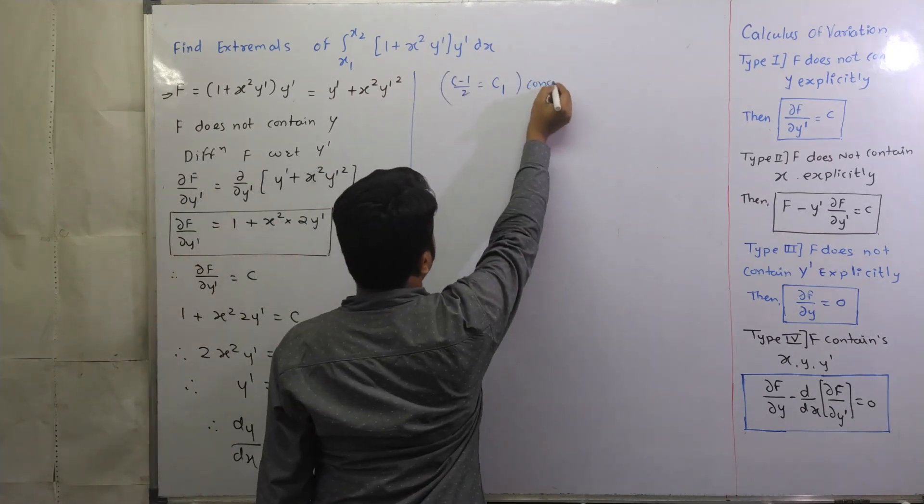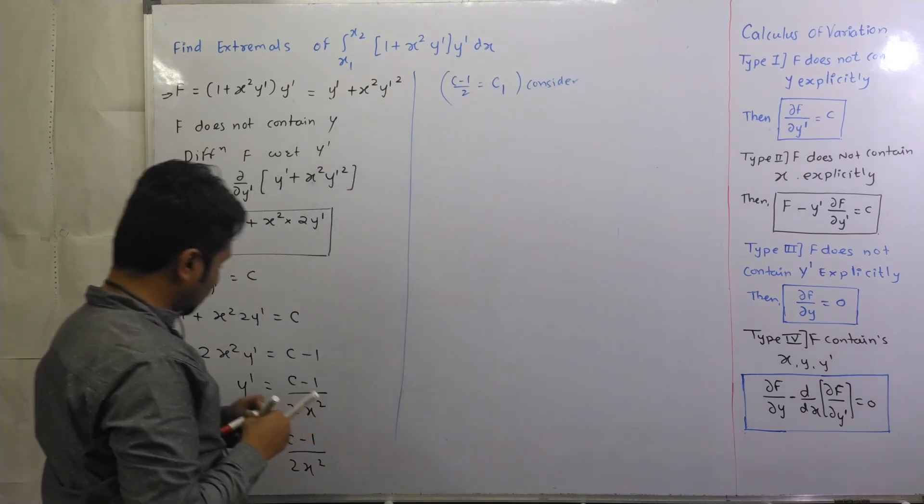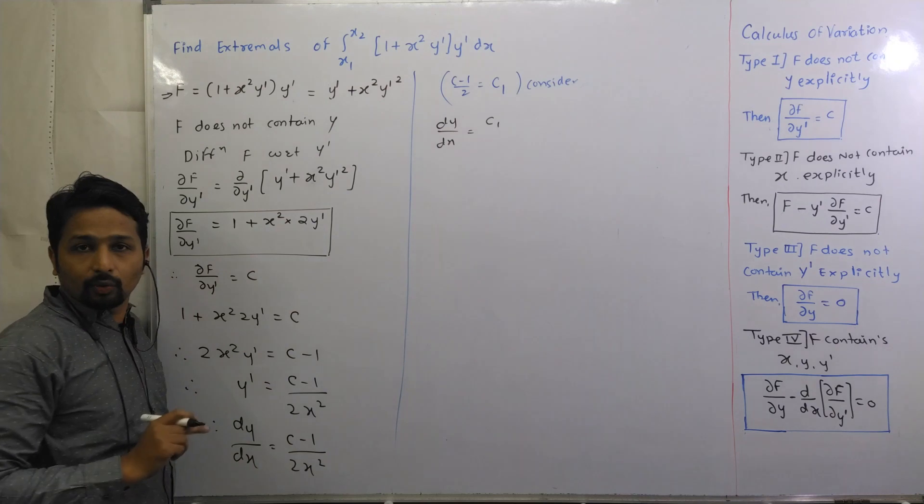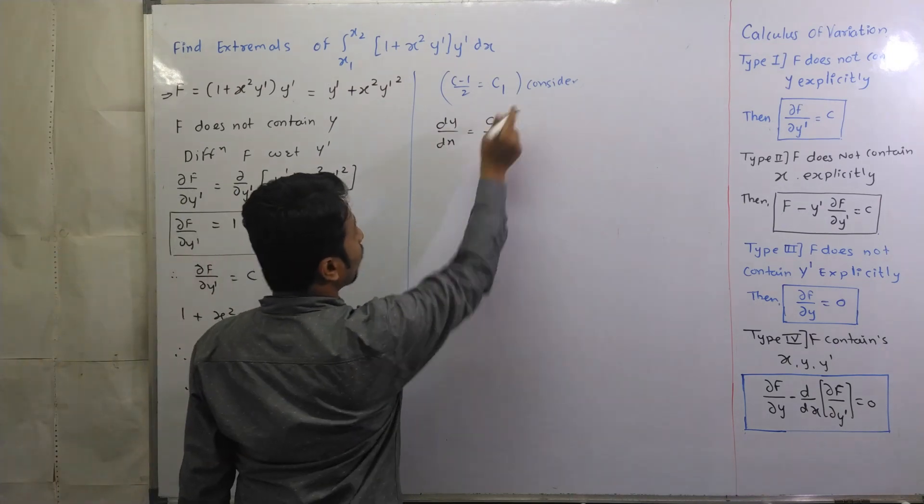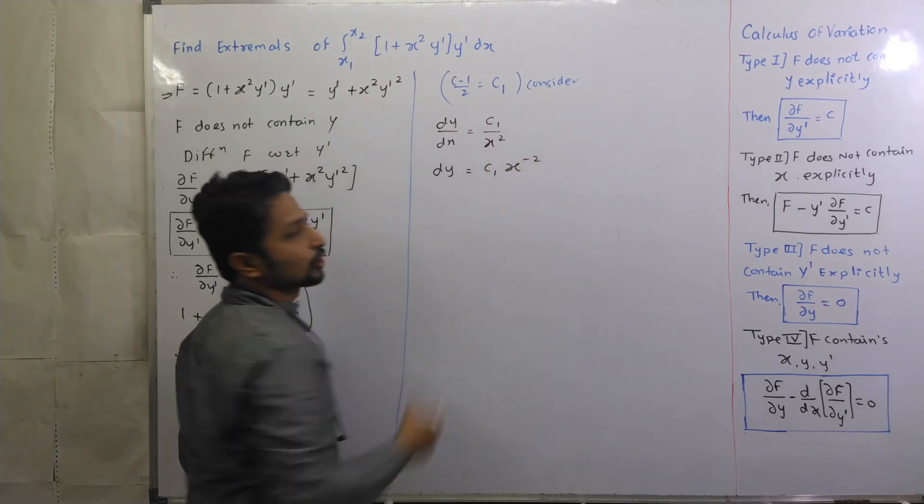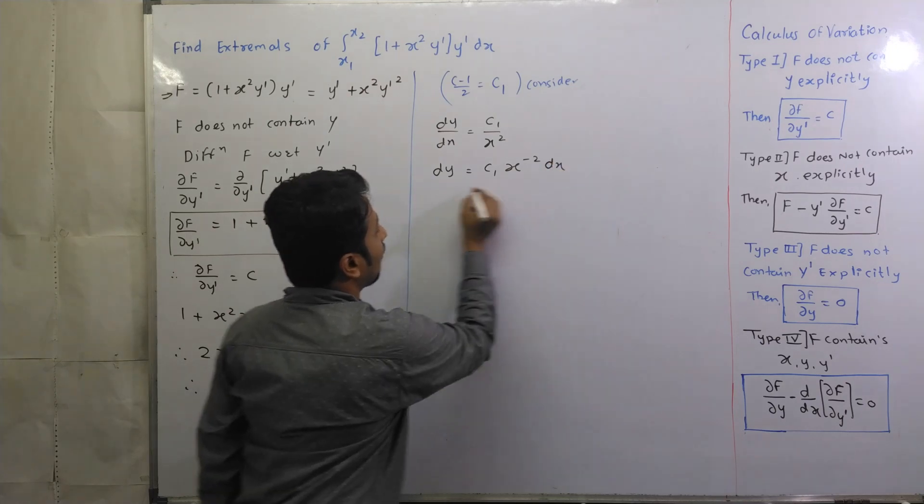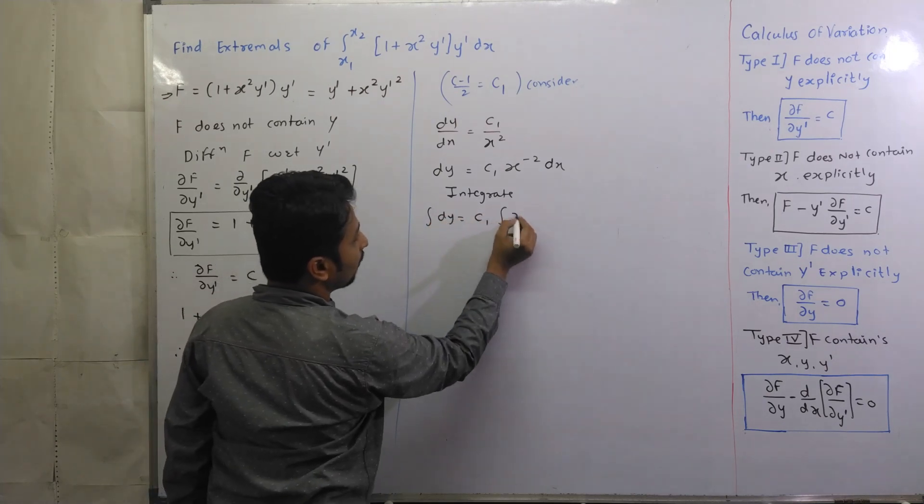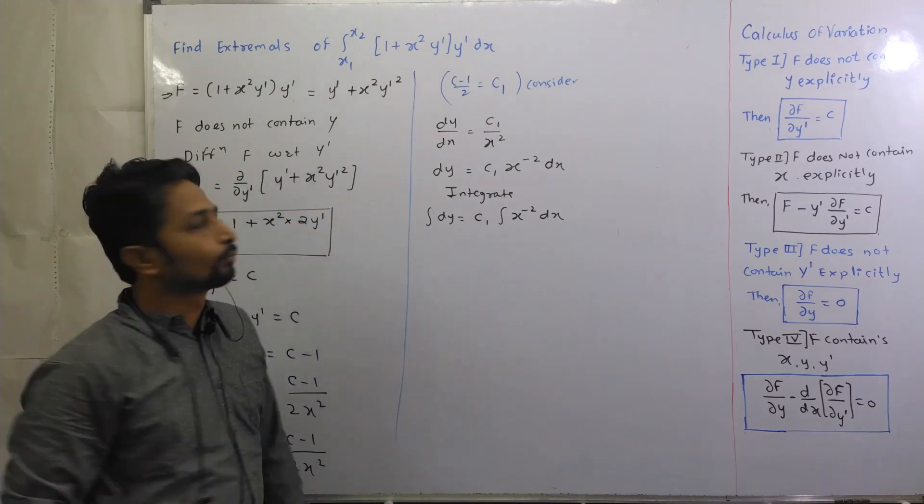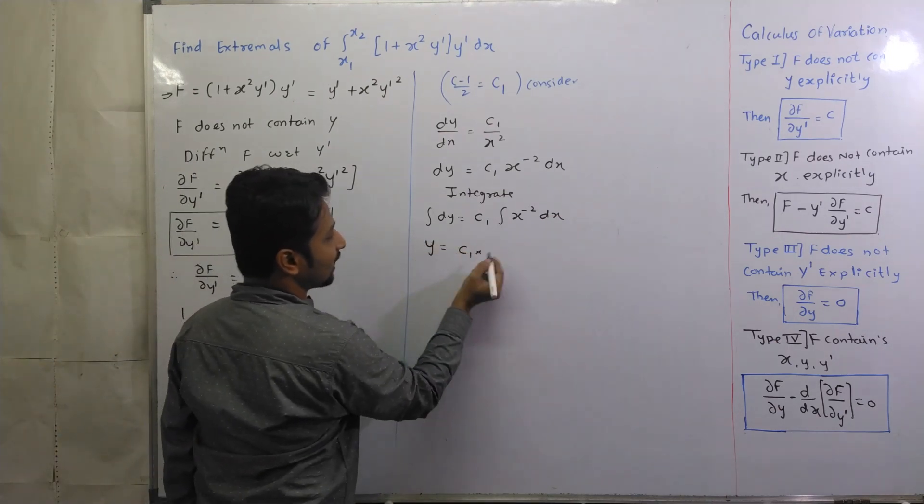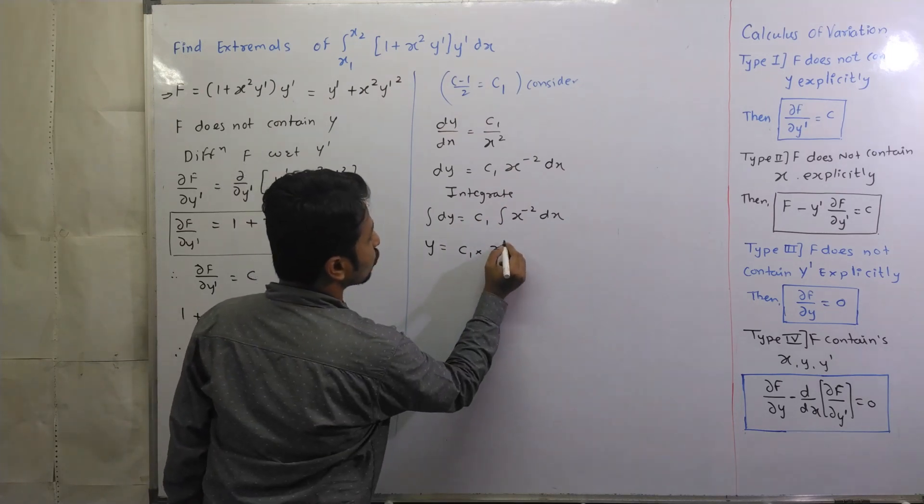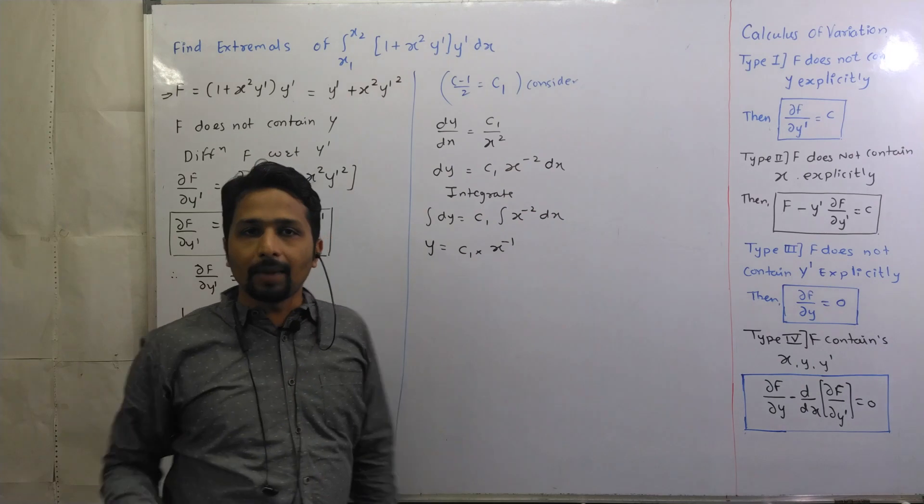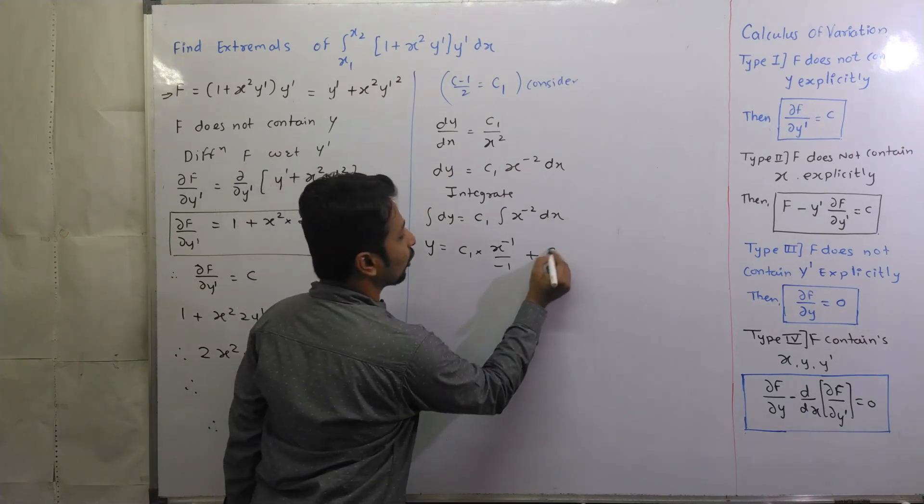So what do you have? dy by dx is equal to new c1 upon x square. x square moves up so it becomes c1 x raise to minus 2 dx. And then integrate. So integration of dy equals c1 integration of x raise to minus 2 dx. dy ka integration y, c1 x raise to minus 2 ka solution will be x raise to minus 1 because formula is x raise to n plus 1, so minus 2 plus 1 is minus 1 upon minus 1.